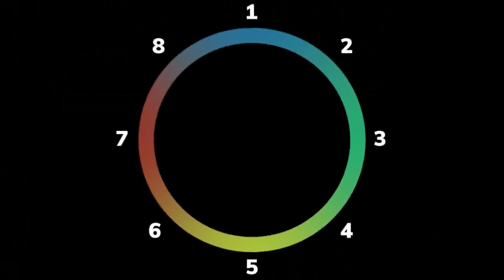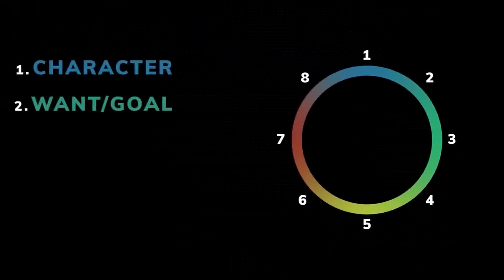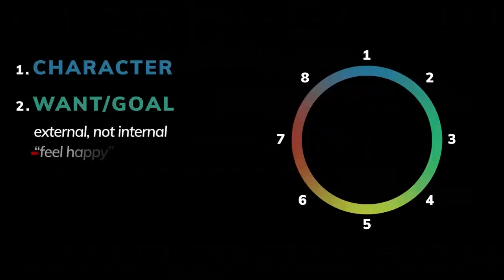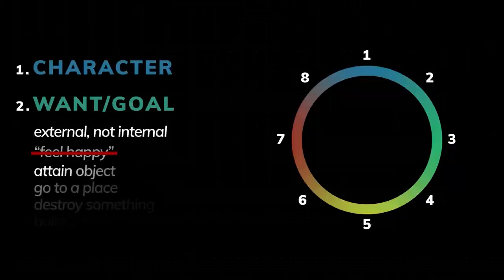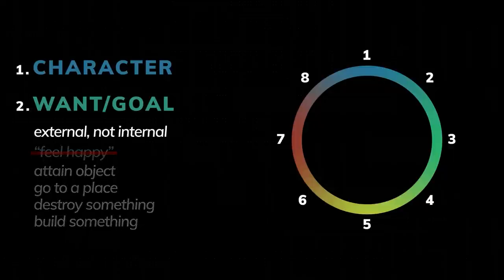Here is a clearer way to think about story circle structure. Let's go through this together. First, you have a character with a want or goal. This is something external. The want cannot be to feel happy or to not be depressed — it needs to be in the external world. Attain an object, go to a place, destroy something, build something, etc. Make it external.